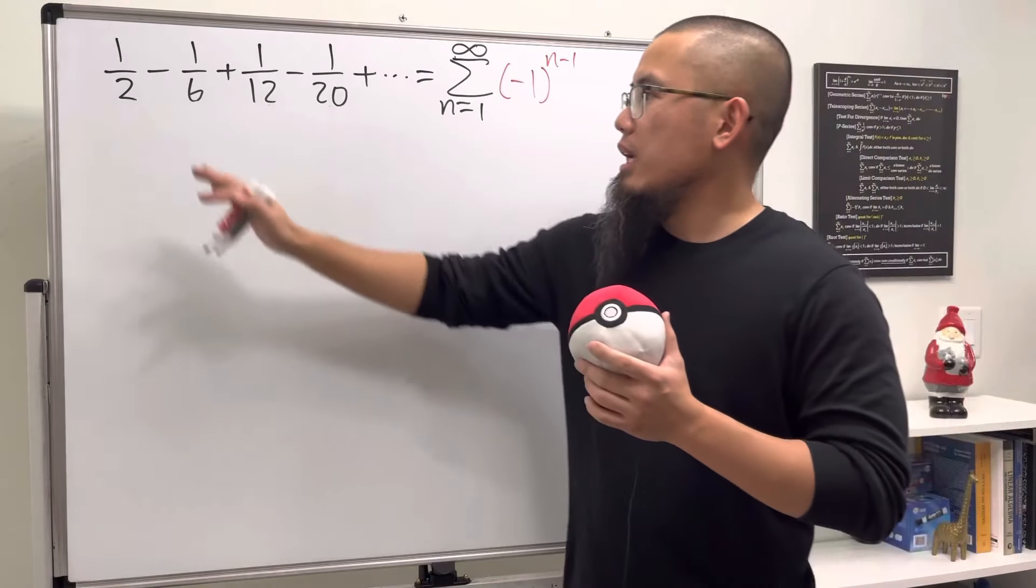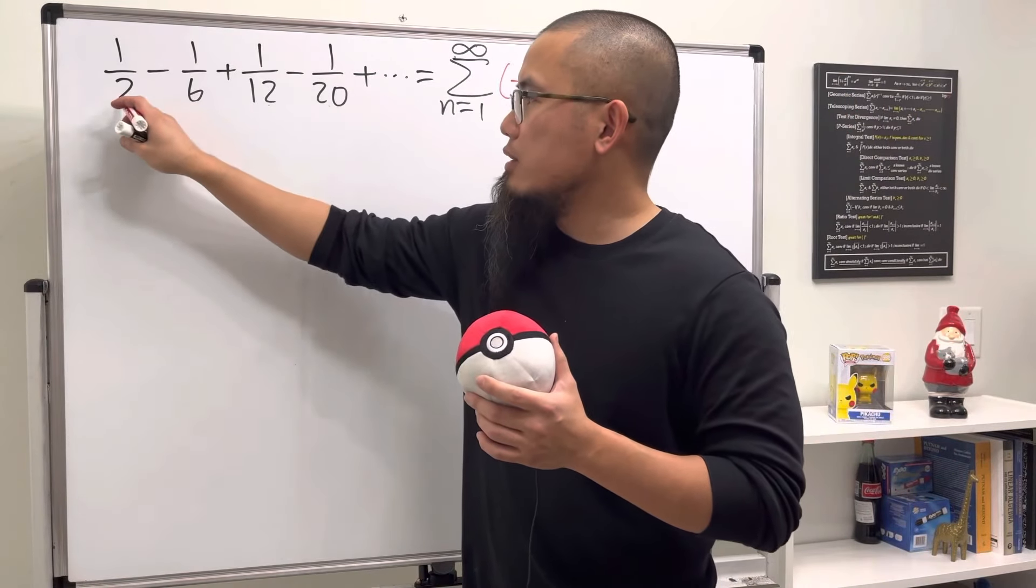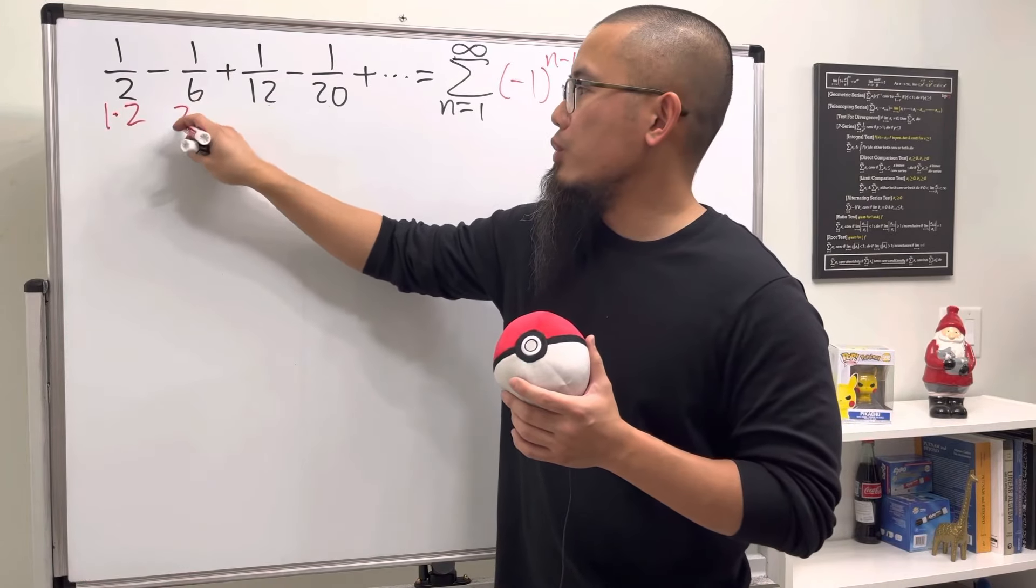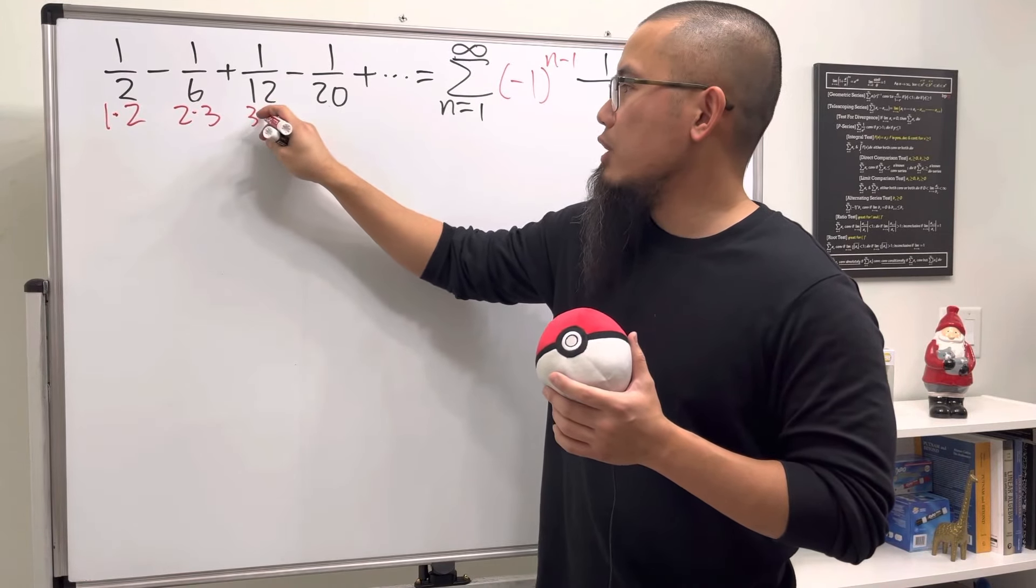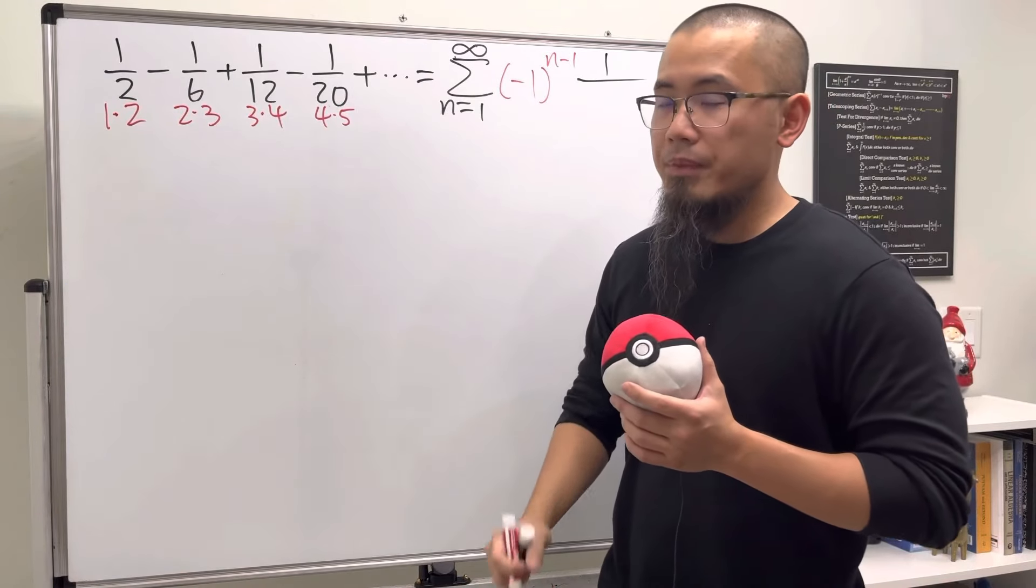Everything on top is just 1. Now on the bottom we see that right here is 2, which is the same as 1×2, and the 6 is the same as 2×3, and this is 3×4, and likewise 4×5, and so on.